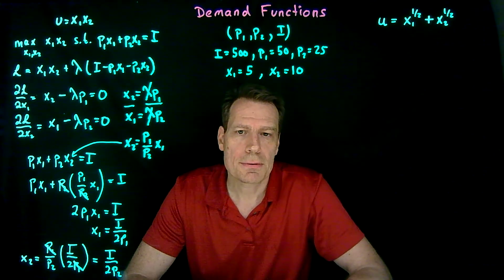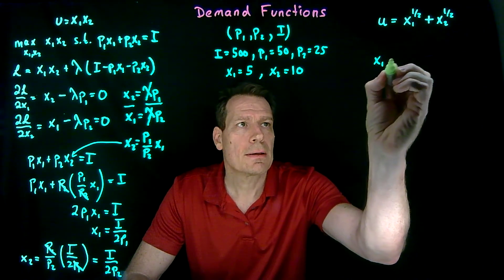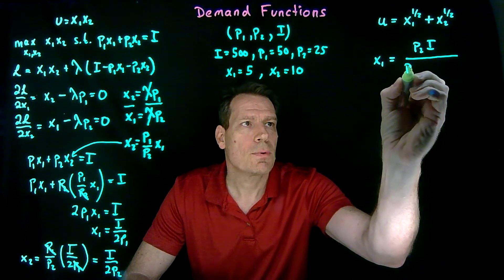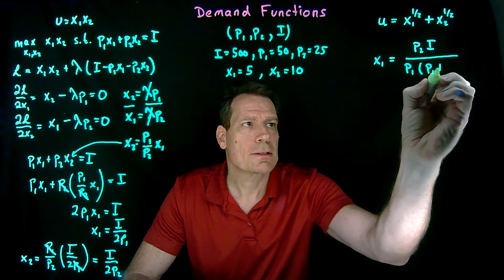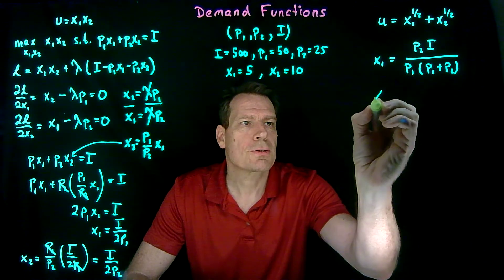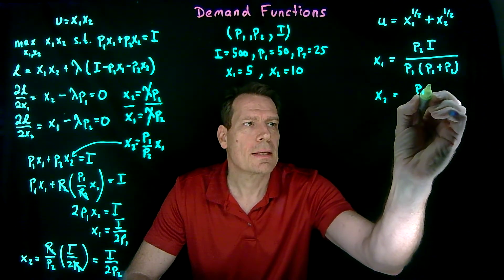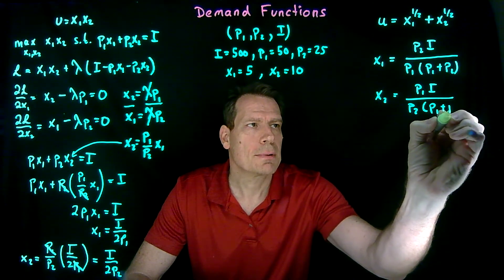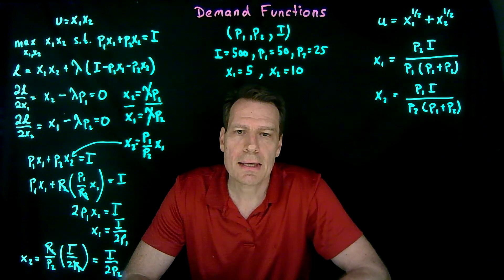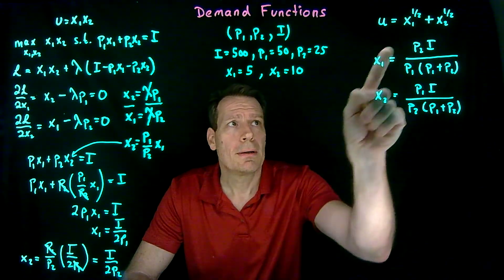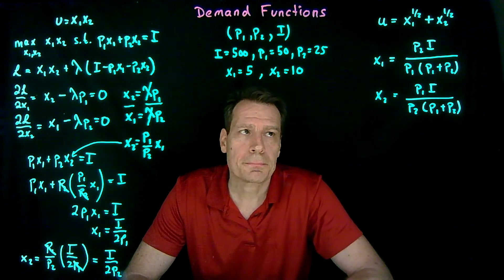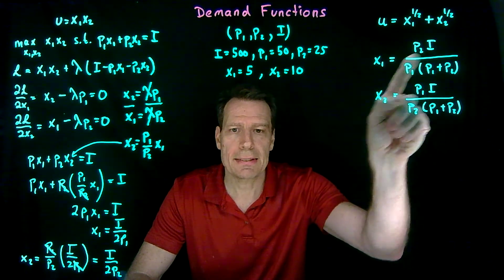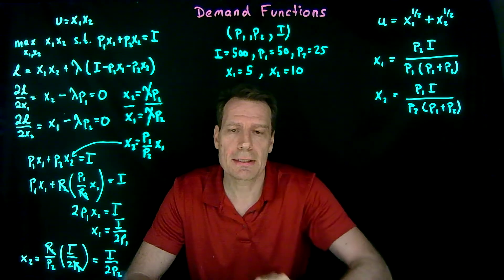In particular, we would get that x1 is equal to p2 times i divided by p1 times p1 plus p2. And for x2, we would get p1 times i divided by p2 times p1 plus p2. You can check that that's right by just resolving this problem but using this utility function instead. Now we have the demand for x1 being a function of the price of good 1, the price of good 2, and income. So it's a function of the entire economic environment.